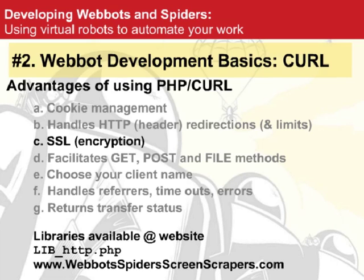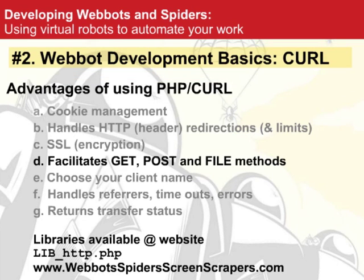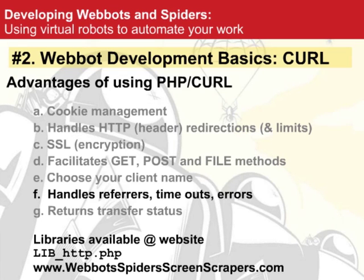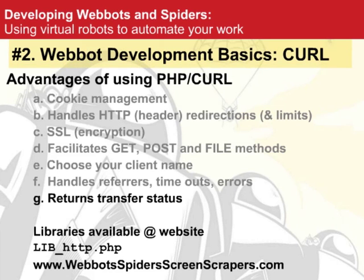PHP cURL facilitates all your GET, POST, and file methods. It also lets you choose your client name — instead of the default cURL version string, you can emulate a browser, which is sometimes important because some websites only work for specific browsers. The client name is what the web administrator will see in the log file. cURL also handles referrers, timeouts, errors, and returns transfer status — you can see how long a download took, how long the DNS lookup took, and various other metrics.